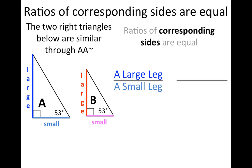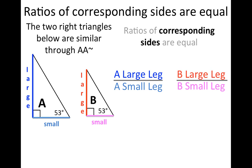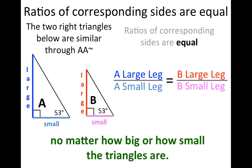The large leg of A compared to the small leg of A is going to equal the large leg of B compared to the small leg of B. When we say the ratios of corresponding sides are equal, we mean that the large versus small of one triangle equals the large versus small of the other, if those triangles are similar. It doesn't matter how big or small the triangles are — if they're similar, the ratio of the sides will always stay the same.